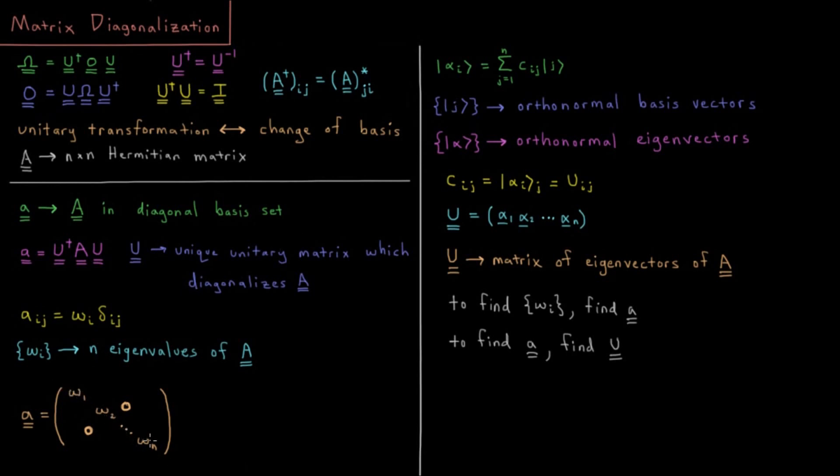So those are the eigenvalues, but what about the eigenvectors? So eigenvector alpha which has some component i, eigenvector alpha component i is a sum of j equals one to n of some coefficients in each basis vector. Because remember alpha is a vector, it's represented in terms of whatever basis vectors we're representing A in.